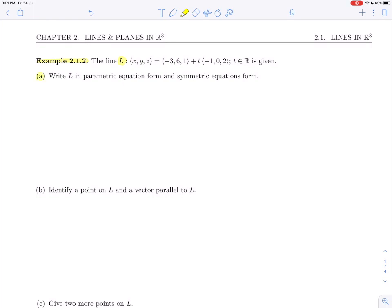We're asked in part A to write L in parametric equation form and symmetric equations form. For parametric equation form, we read by components: x = -3 - t, y = 6, and z = 1 + 2t, with t in ℝ. That's all there is to writing in parametric equation form.